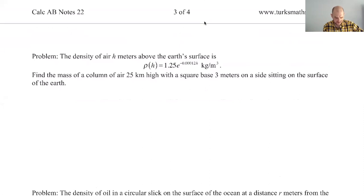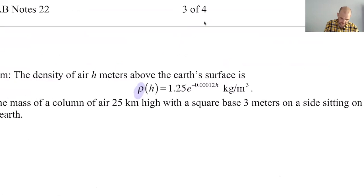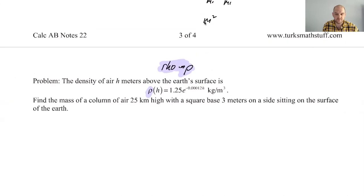The density of air h meters above the Earth's surface is given by this, like whatever that means. So this is actually rho. It's a Greek letter. It's not a P. I'll write it up here. It's RHO, and it looks like a P for sure. I think most people just actually write a P and then call it rho if they're fancy and sometimes just call it P.